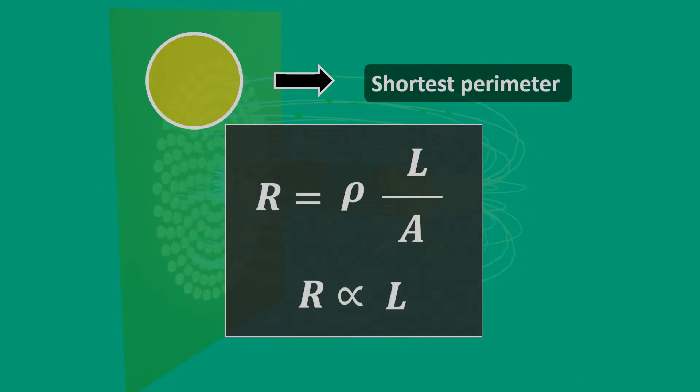And therefore, charge carriers including electrons take the path of least resistance. That's why they are flowing in a circular pattern instead of any other pattern.